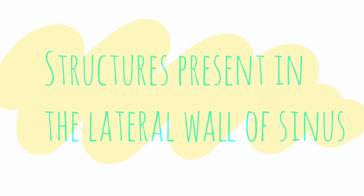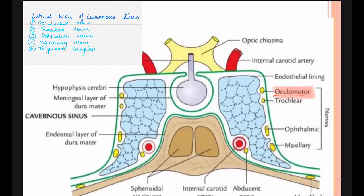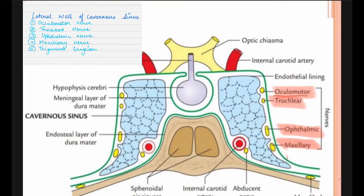Coming on to the structures present in the lateral wall of the sinus. The structures are: the oculomotor, the trochlear, the ophthalmic, maxillary, and the trigeminal ganglion. The trigeminal ganglion is a cave-type structure present in the cavernous sinus. There are a total of five structures present in the lateral wall of the cavernous sinus.